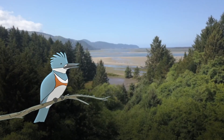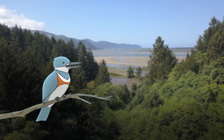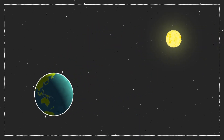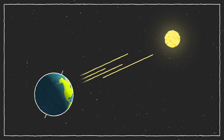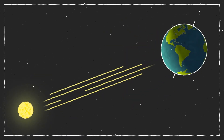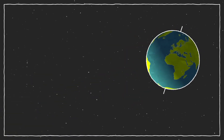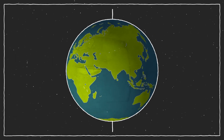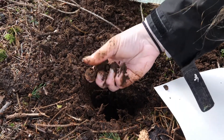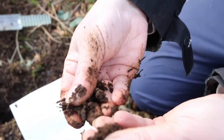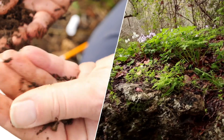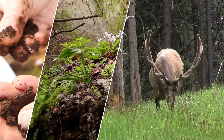Depending on where you live on Earth, the sun may shine more or less on your habitat. In different places during different seasons, the angle of the sun can be very different. This affects rainfall and temperature, determining an area's climate. Climate affects the soil on the ground, and different types of soils help support different types of plants. Different types of plants help support different animals.